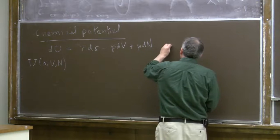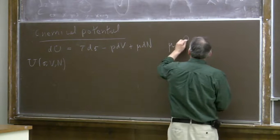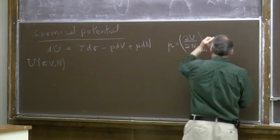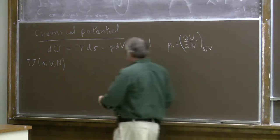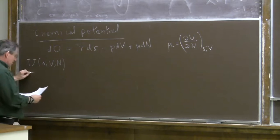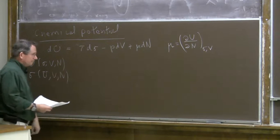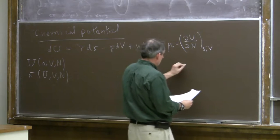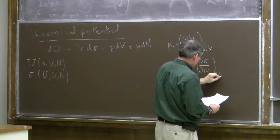One way of defining what we mean by chemical potential: this identity tells us that if entropy and volume are fixed, the chemical potential is the derivative of internal energy with respect to number of particles. If we think of entropy as a function of U, V, and N, then the chemical potential can be written as minus temperature times the derivative of entropy with respect to number of particles with internal energy and volume fixed.